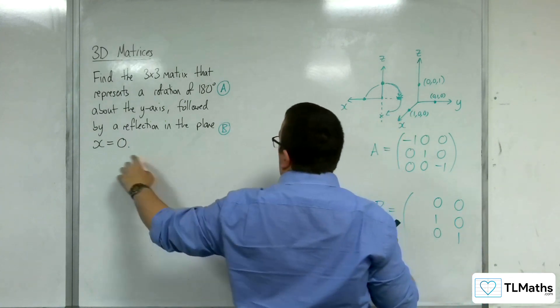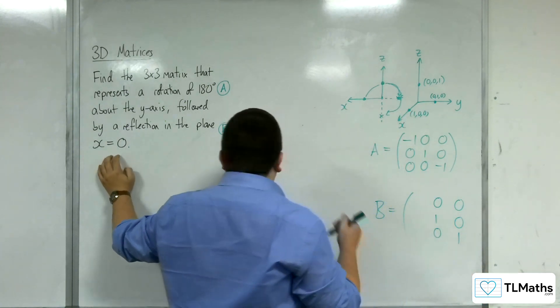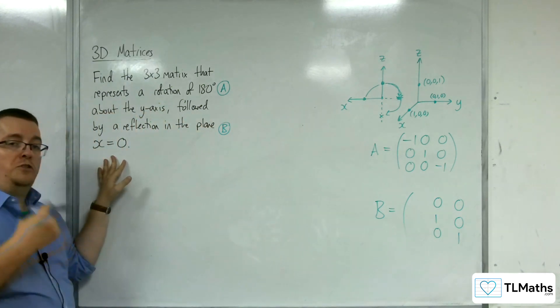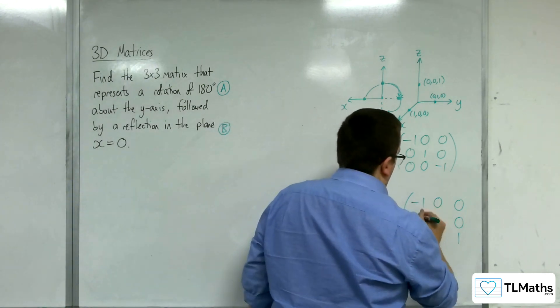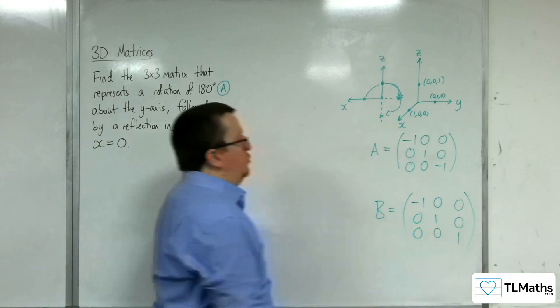They are fixed. It is the one that is in the x-axis, on the x-axis, 1, 0, 0, that goes to minus 1, 0, 0. And so, that is my matrix B.